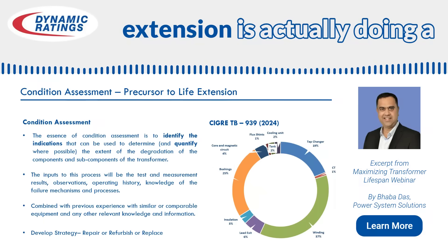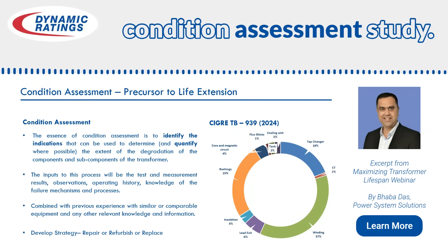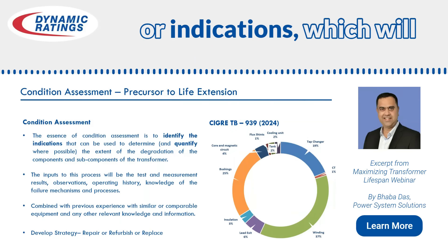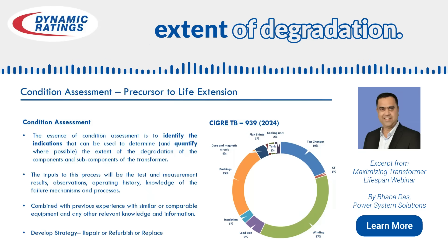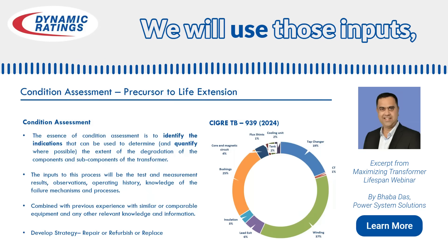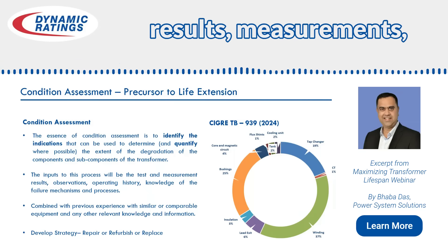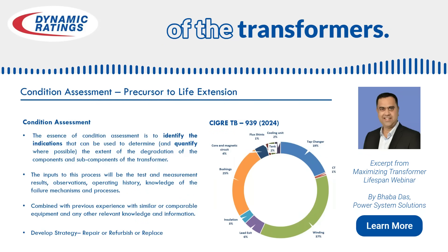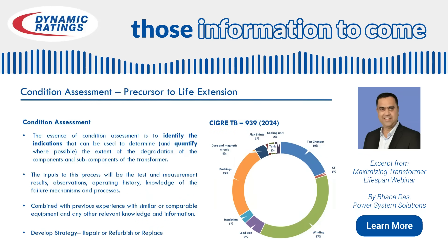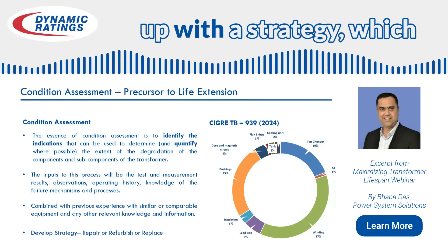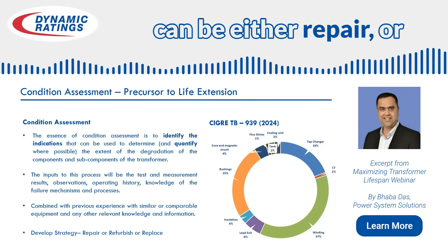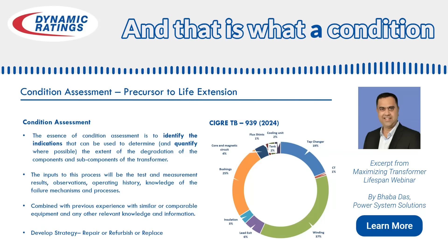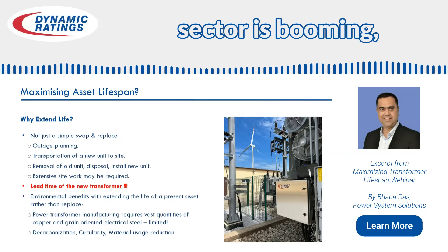The precursor to life extension is actually doing a conditional assessment study. It is to identify those signs or indications which will help us to determine the extent of degradation. We will use those inputs — our results, measurements, visual inspections, our knowledge of the history of the transformers — and then use all of that information to come up with a strategy, which can be either repair or refurbish the transformer, or replace the transformer. That is what a conditional assessment is all about.